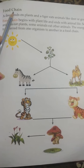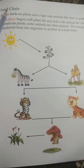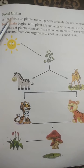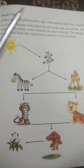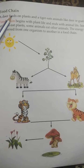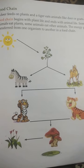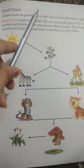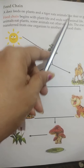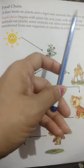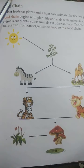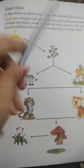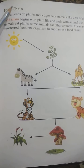What is a food chain? A food chain is a chain in which living things depend on each other for food — whether animals or plants. For example: deer feeds on plants, and tiger eats animals like deer and goat. Things that depend on each other in this way form a food chain.